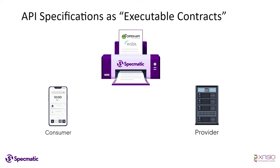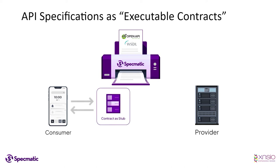Specmatic reads your API specifications such as OpenAPI, AsyncAPI, and WSDL, and makes them available as a stub server which is a service virtualization of the provider. This stub server is significantly different from the hand-rolled stub we saw earlier, because this service virtualization of the provider is truly representative of the actual provider — it is based off of the API specification that was jointly agreed upon between the consumer and the provider teams.